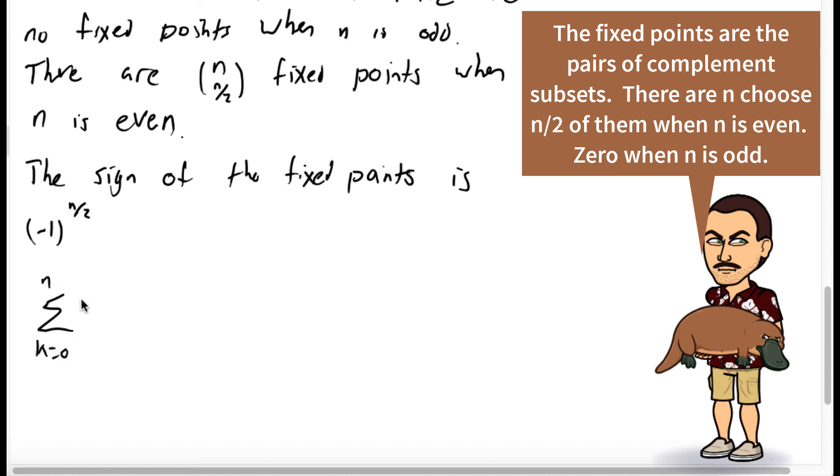And so we can conclude that the sum from k equals 0 to n of negative 1 to the k times n choose k squared is equal to, well, it's equal to 0, the number of fixed points if n is odd. And it's equal to negative 1 to the n over 2, n choose n over 2 if n is even.